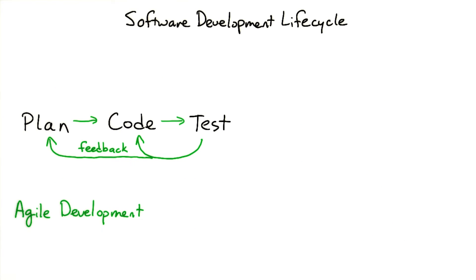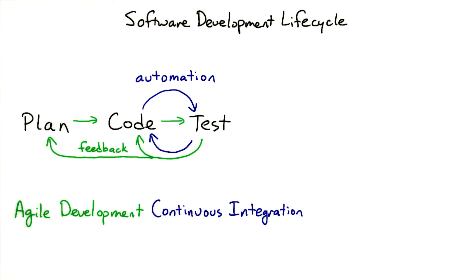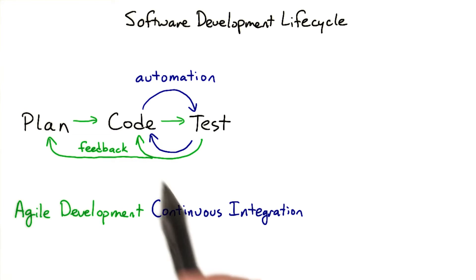When we start to improve this by automating build and unit test processes, this is covered by continuous integration. The automation process helps with iterative development and makes sure that changes or new features do not break other functionality.